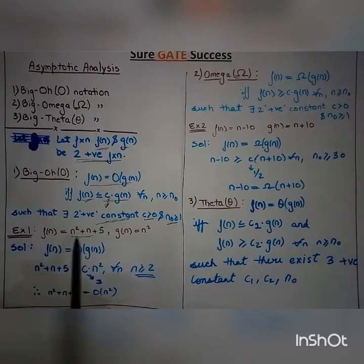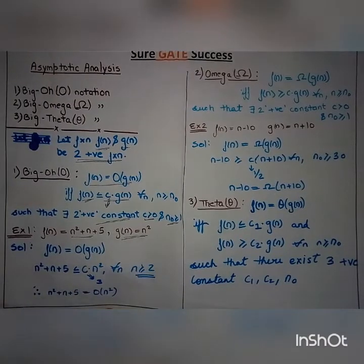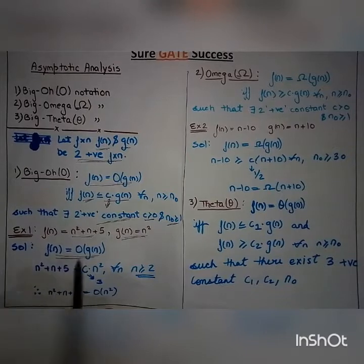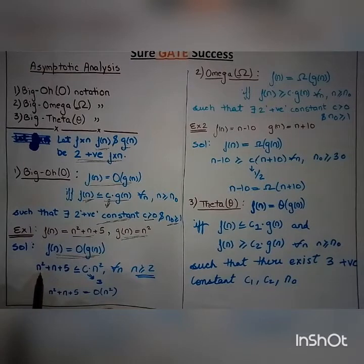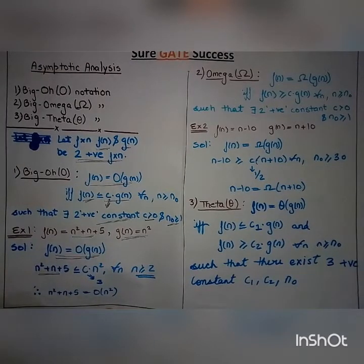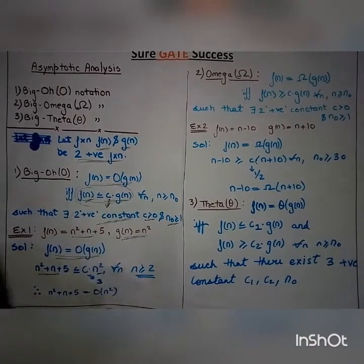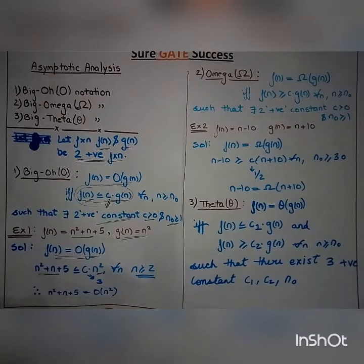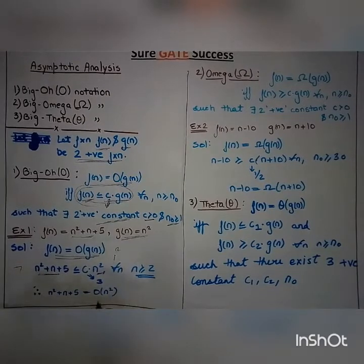In this example, f(n) is given as n² + n + 5 whereas g(n) is given as n. We have to prove that f(n) is Big O of g(n). Let's put the values into the condition one by one. If we put n = 1, then f(1) = 1 + 1 + 5 = 7, and for that we would need c = 7.